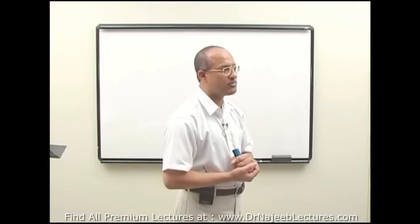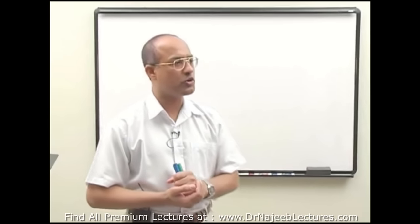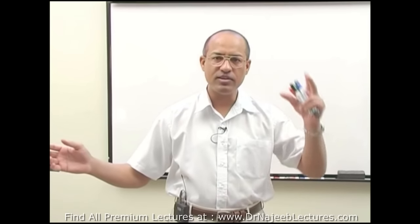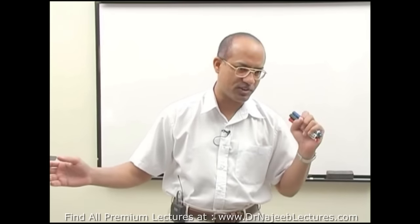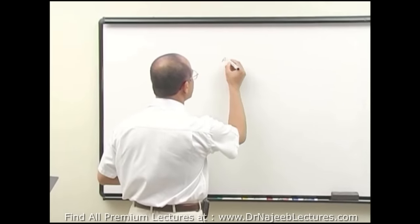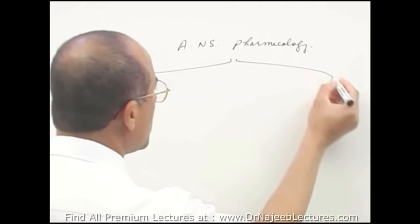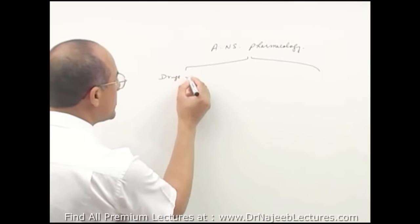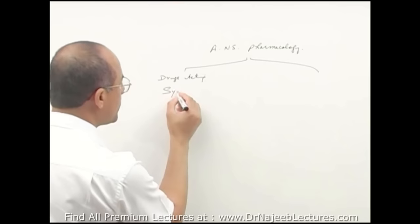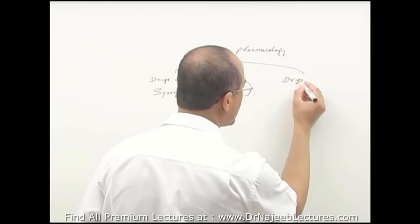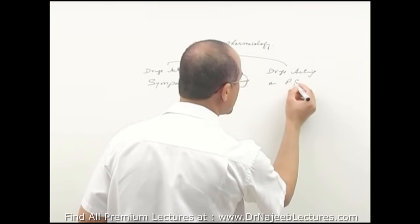Today we are starting a very important part of medical education: the autonomic nervous system and the drugs acting on it. When we talk about the pharmacology of the autonomic nervous system, we divide the drugs into two main groups — drugs acting on the parasympathetic nervous system and drugs acting on the sympathetic nervous system.